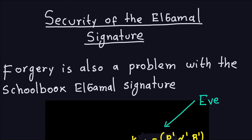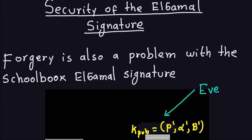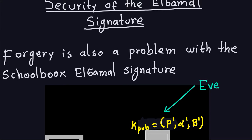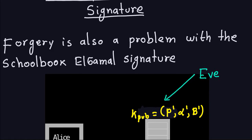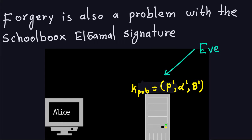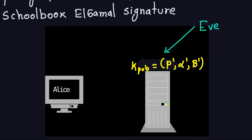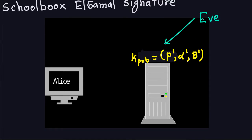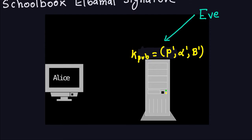Hello and welcome. In this video we'll talk about the security of the Elgamal signature. The first thing we're going to look at is forgery — the attacker Eve can impersonate Bob just by replacing the public parameters with her own: P prime, alpha prime, and B prime. If Eve can do that, she can sign messages and Alice will believe those messages were signed by Bob. This is a problem shared with the RSA signature.